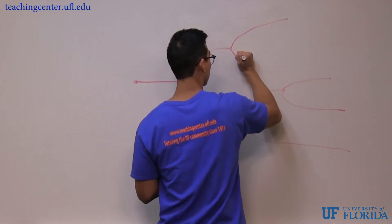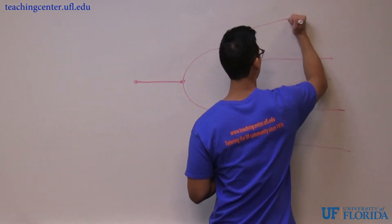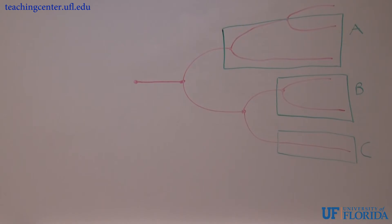A clade is an ancestor and all descendants of that ancestor. From the phylogenetic tree that we drew, which one would you consider a clade? A, B, or C?